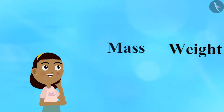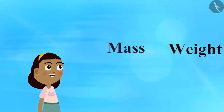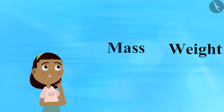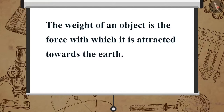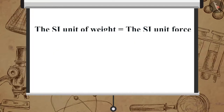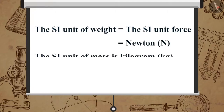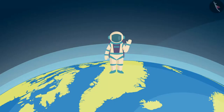Mass and weight are two different properties of an object, and that is why they have different units of measurement. The weight of an object is the force with which it is attracted towards the earth, so its SI unit is the same as that of force, which is Newton. The SI unit of mass is kilogram.